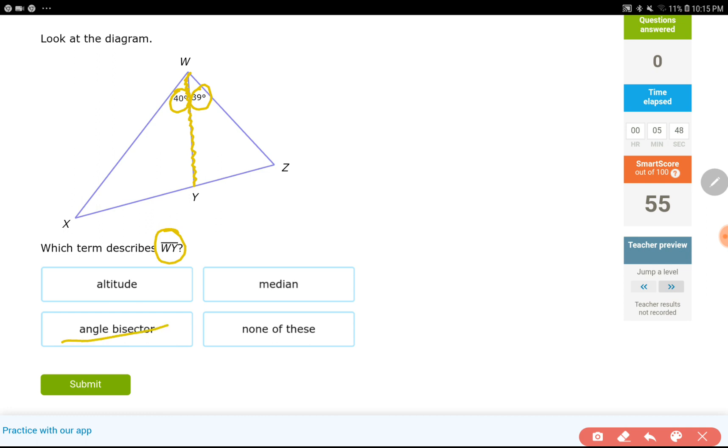Altitude means you need a 90 degrees angle. Median means the side XZ should be cut in half, but I don't know if they're cut in half. So I cannot say it is median. There's no 90 degrees. So there's only one option left. It's none of these. Moving on to the next level,